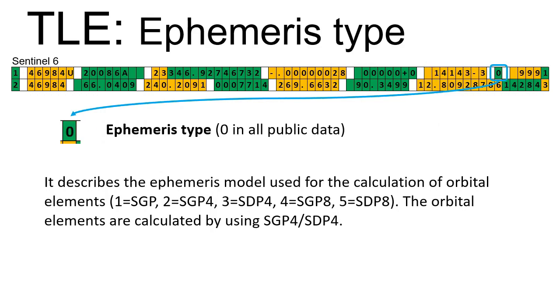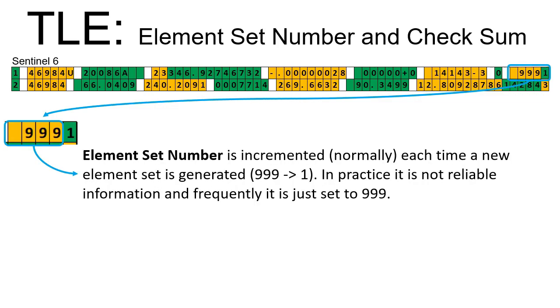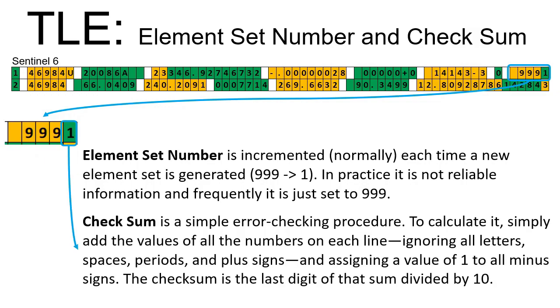Ephemeris type is set to zero in all public data. Element set number is incremented each time a new element set is generated. Check sum is a simple error checking procedure.